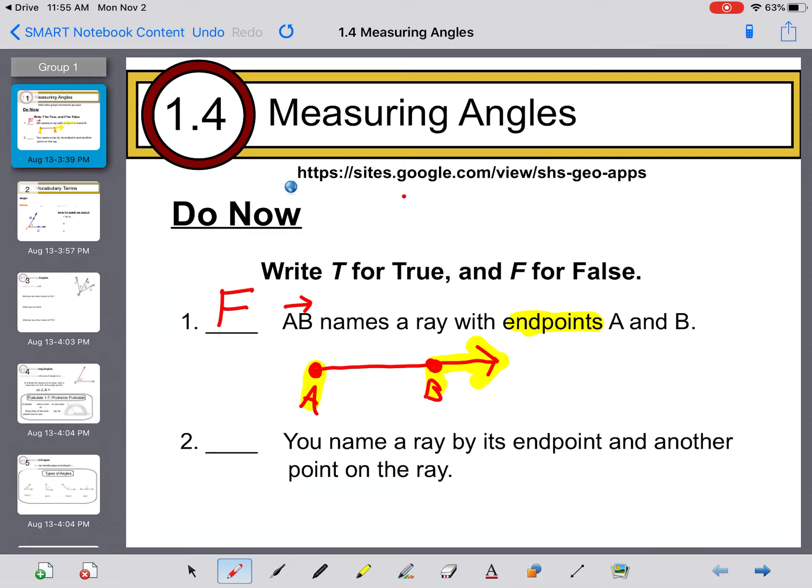Number two: You name a ray by its endpoint and another point on the ray. If you take a look, we name the ray above here ray AB because of its endpoint and another point on the line. This is true.